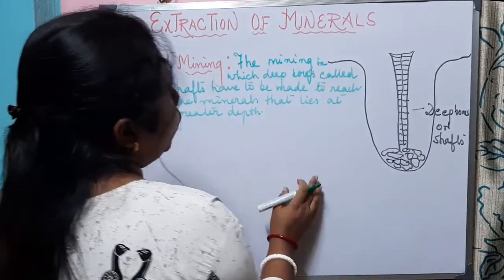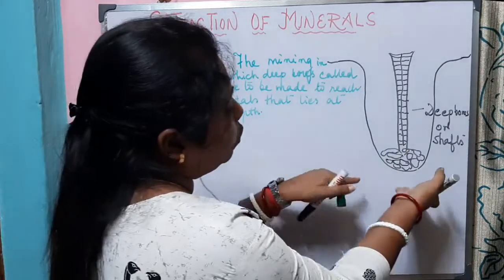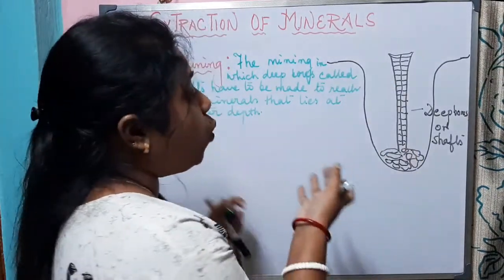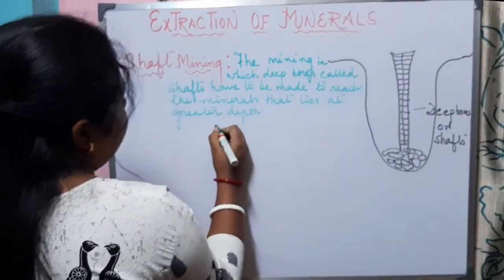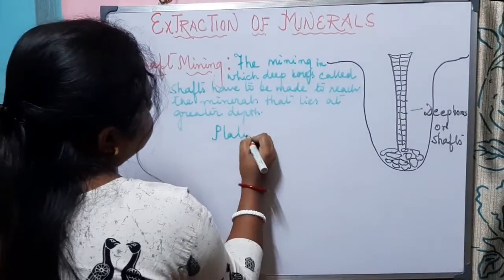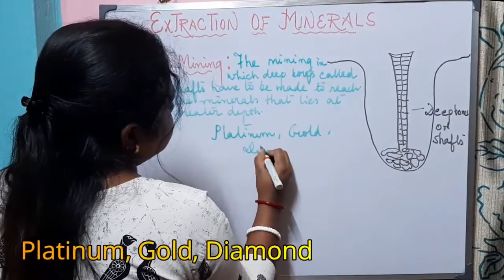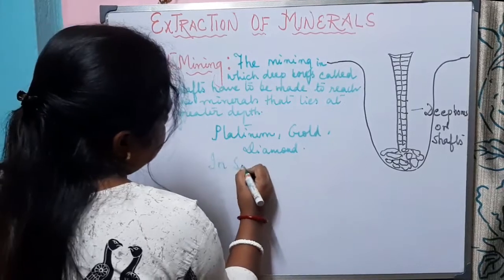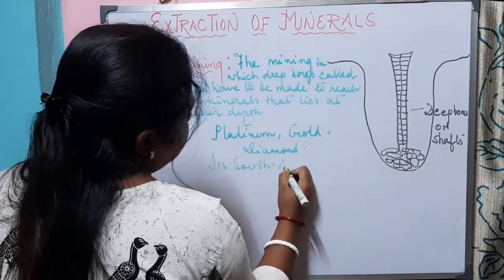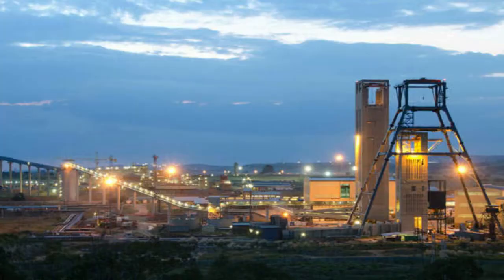Here we dig out shafts or deep bores and go deep down into the earth to take out the minerals. The minerals mostly extracted by shaft mining include platinum, gold, and diamonds. In South Africa, shaft mining is widely practiced to take out these precious minerals.